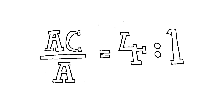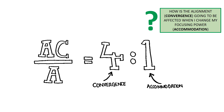We all know a normal ACA ratio is 4 to 1, but what does this really mean? Basically, it's saying that for every diopter of accommodation I need four prism diopters of convergence. Another way of saying this is: how is my alignment or posture, the convergence, going to change when my focusing power or accommodative demand changes?